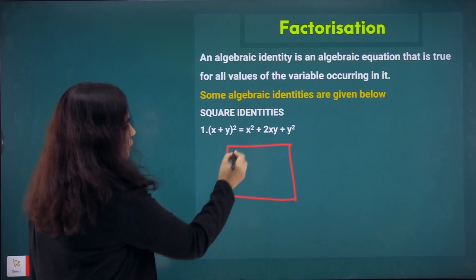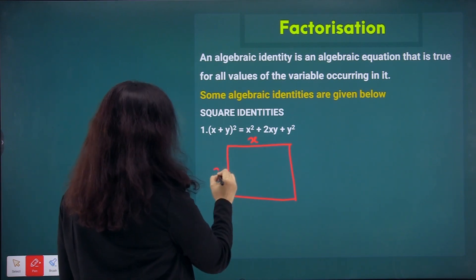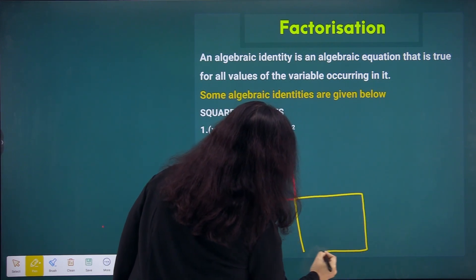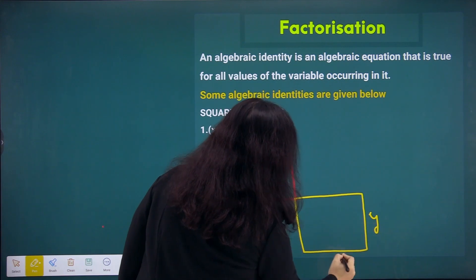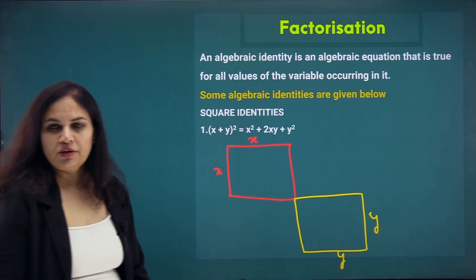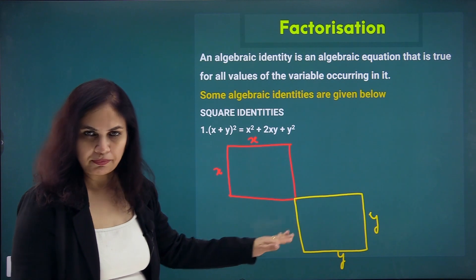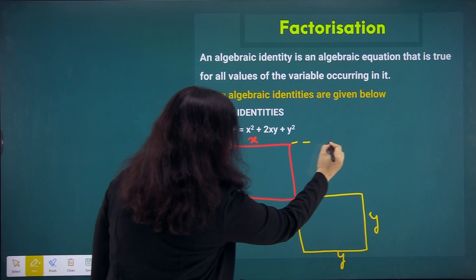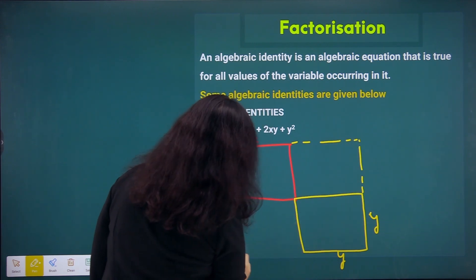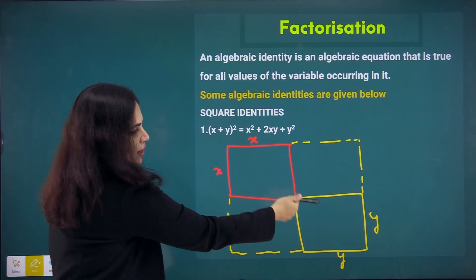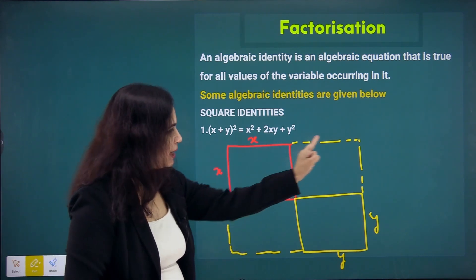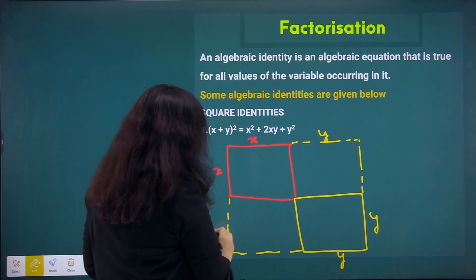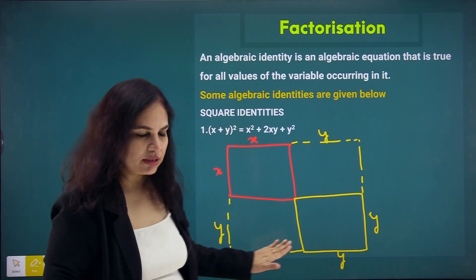Suppose I have taken a square of side x by x and another square of side y by y. We have two squares. Now, if I join them, am I getting a complete square? If I simply add this square and this square, am I able to complete the full square of side (x+y)? No, I am not able to complete the square.